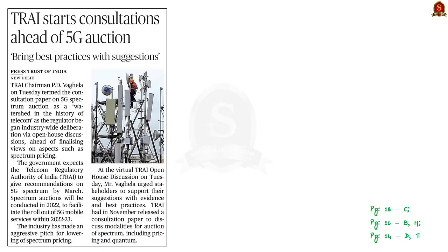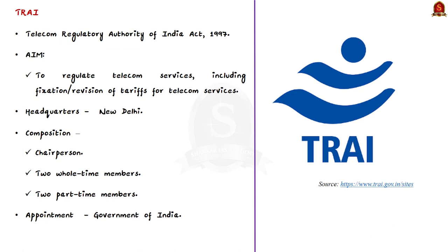The next article is with reference to a consultation paper released by the Telecom Regulatory Authority of India — TRAI — in November 2021. The paper aims to discuss the modalities for auction of 5G spectrum, including pricing and quantum. In this context, we will learn about TRAI from a prelims perspective.